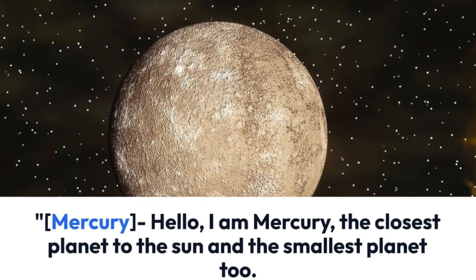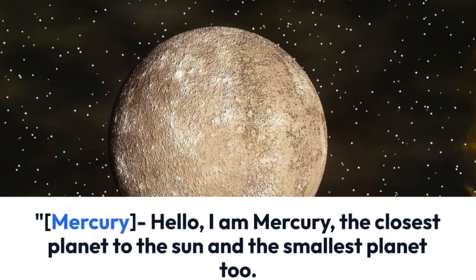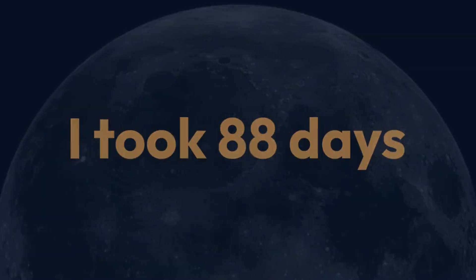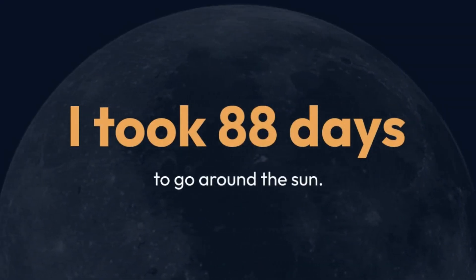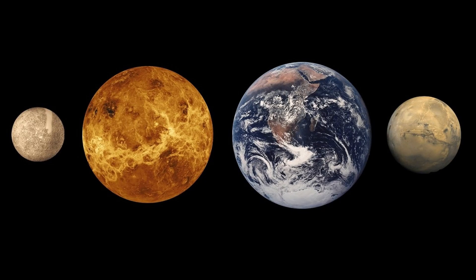Hello, I am Mercury, closest planet to the Sun and smallest planet too. I take 88 days to go around the Sun. That's my time. Thank you.